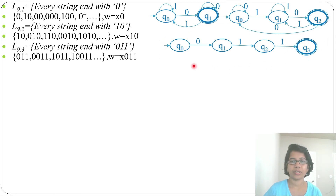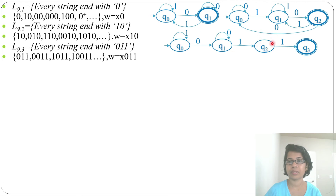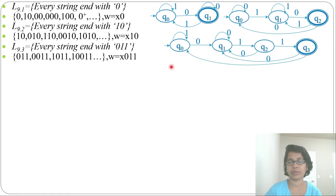Now we fill the rest. From q0 by 1, it can be a self-loop because it ends with 011, so before that it can be anything. From q1 by 0, it can also be a self-loop because it will still end with 011. From q2, 0 cannot loop because that would give 10, not 011; so from q2 by 0 we go to state q1. From q3 by 0, it will come to state q1, and from q3 by 1 it will go to state q0, since 1 following 011 breaks the suffix pattern.